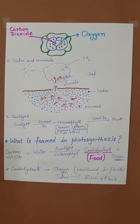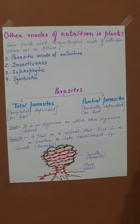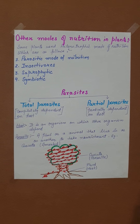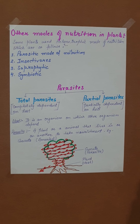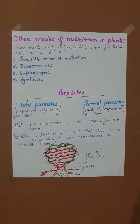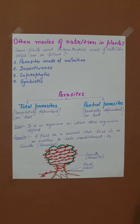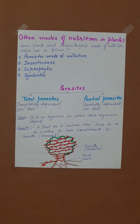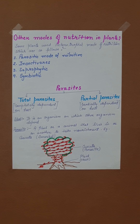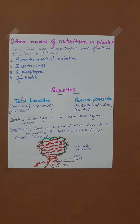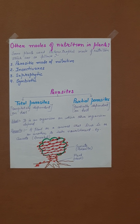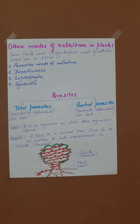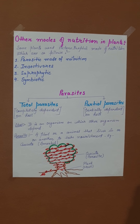Now, let's come to another mode of nutrition. Not all plants are green in color. As you have observed your surroundings, you must have seen plants with yellow leaves, brinjal, purple leaves, and different colors of leaves. Chlorophyll is necessary for the process of photosynthesis. If a plant is not green in color, it means that plant is not able to perform photosynthesis to make its own food. So there are few modes of nutrition in which plants are not autotrophic — plants are heterotrophic.